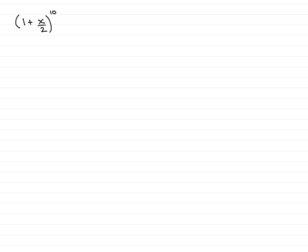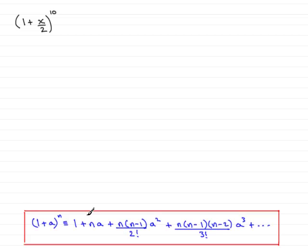Well hopefully you know the binomial expansion but what I've done here is just put it on the bottom here for you just to remind you. If you've got (1 + a)^n then it's identical to 1 plus the power times a plus the power times (1 less than the power) over 2 factorial times a squared and it goes on like that.